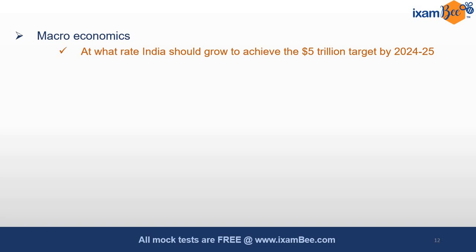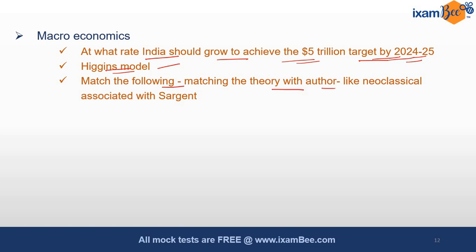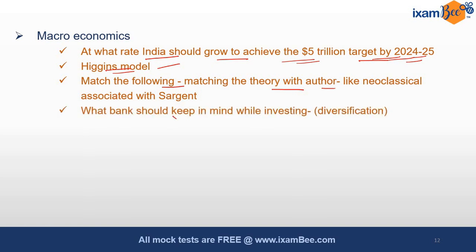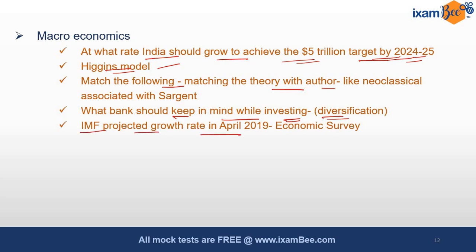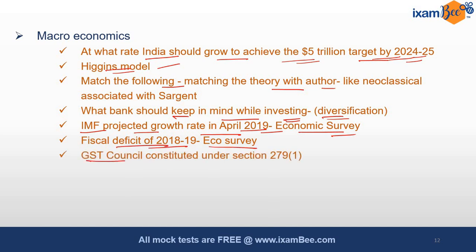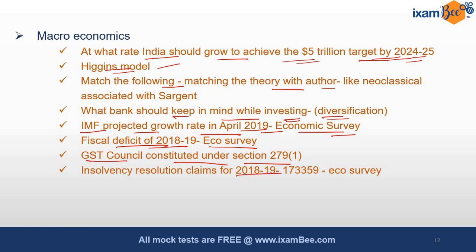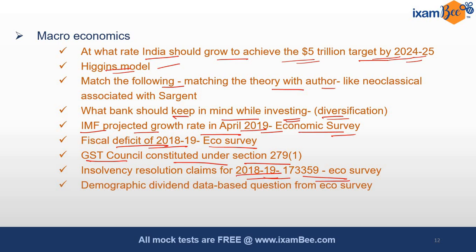In macroeconomics, there was a question on what rate India should grow to achieve the 5 trillion target by 2024–25. There was a matching question on the Harrod-Domar model — matching theory with the author, like neoclassical associated with Solow. Questions on what banks should keep in mind while investing — diversification, the rule of not putting all eggs in one basket. IMF projected growth rate in April 2019, fiscal deficit mentioned in the economic survey, GST council constituted under Section 279, insolvency resolution claims from the economic survey, and demographic dividend data from the economic survey.